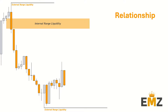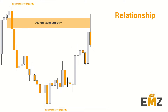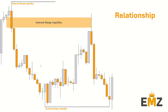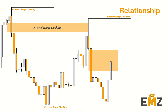You may be wondering what is the relationship between internal range liquidity and external range liquidity. Market does one of two things: rebalances inefficiency or seeks liquidity. Once market rebalances inefficiency — also known as taking our internal range liquidity — market will come and take our external range liquidity. From taking external range liquidity, market will come and take our internal range liquidity, our fair value gap. Whether market wants to take external range liquidity to the upside or downside depends on whether market respects this fair value gap.